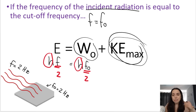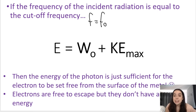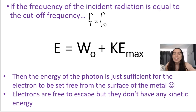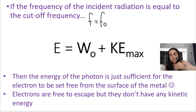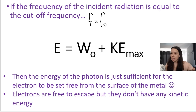I'll cover this with examples in another video in the playlist. All you need to know is that if the light's frequency equals the metal's threshold frequency, there's enough energy for the electrons to escape, but they will have zero kinetic energy.